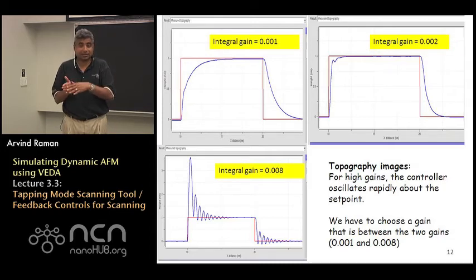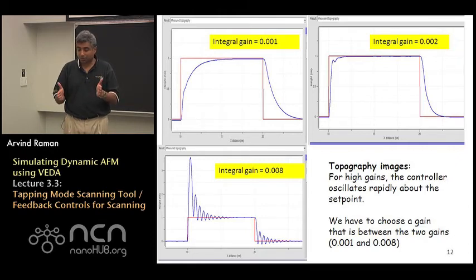The controller should have responded instantly but it doesn't. So near sharp features in AFM images there are always these transient regions which you should be careful about.